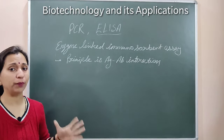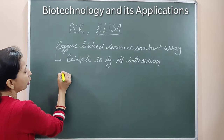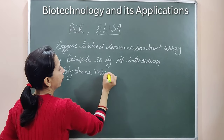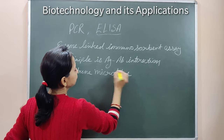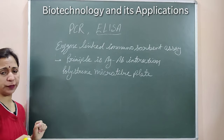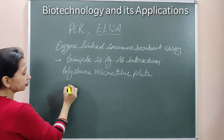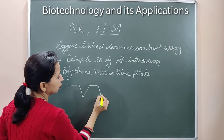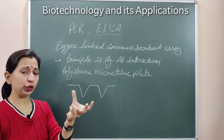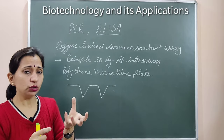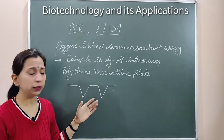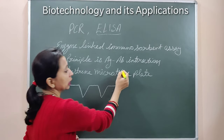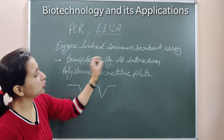In this technique, we use some specific plates made up of polystyrene — called polystyrene microtiter plates. These plates have a special shape with wells inside them. When we look at these plates in longitudinal cross-section, we can see the well-like structures. The ELISA technique is based on the antigen-antibody interaction principle.